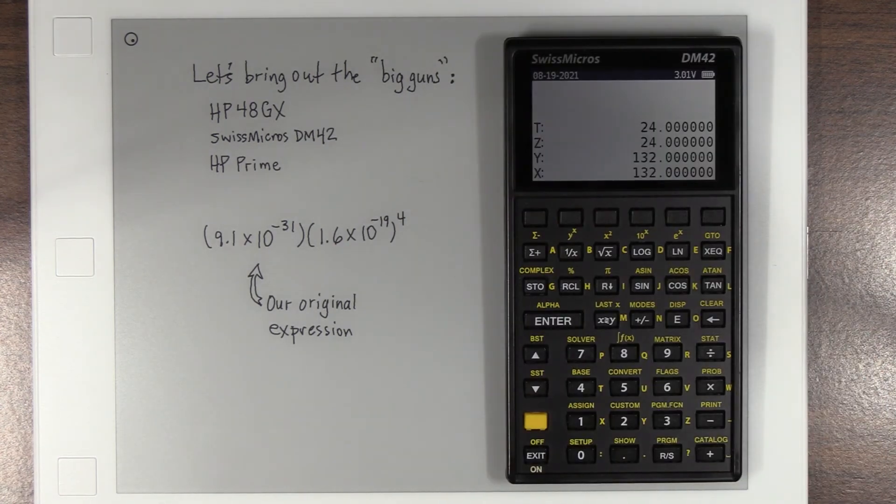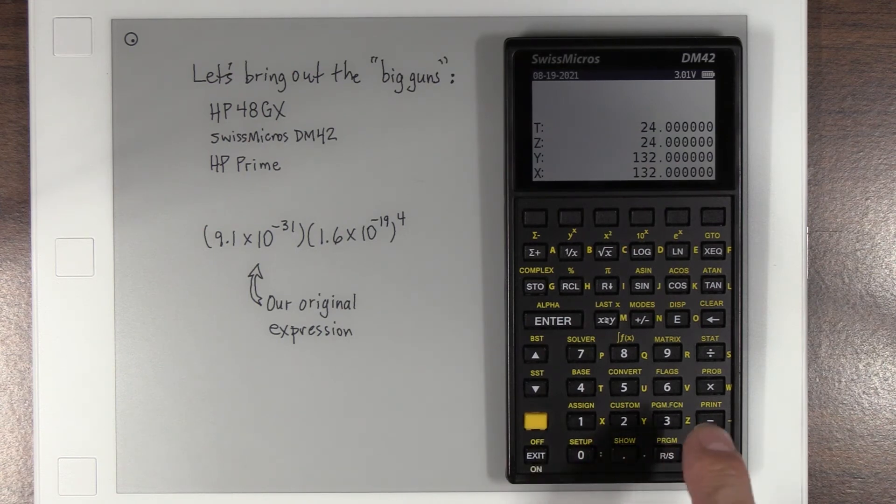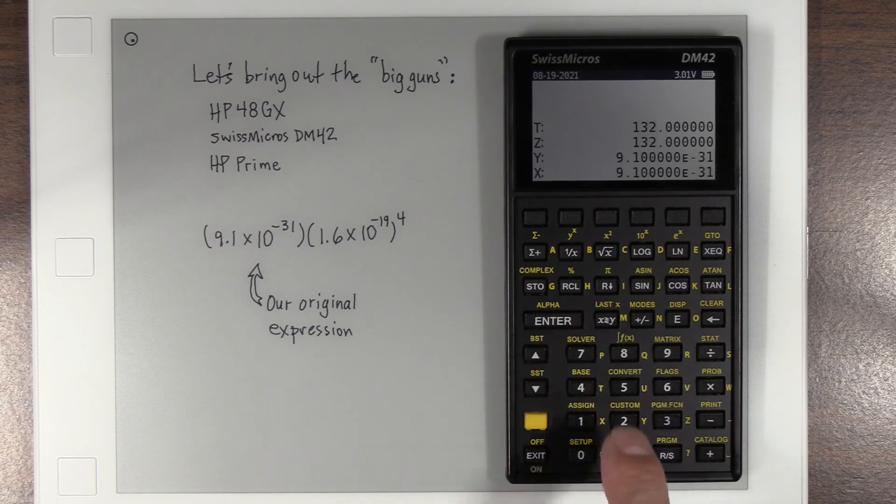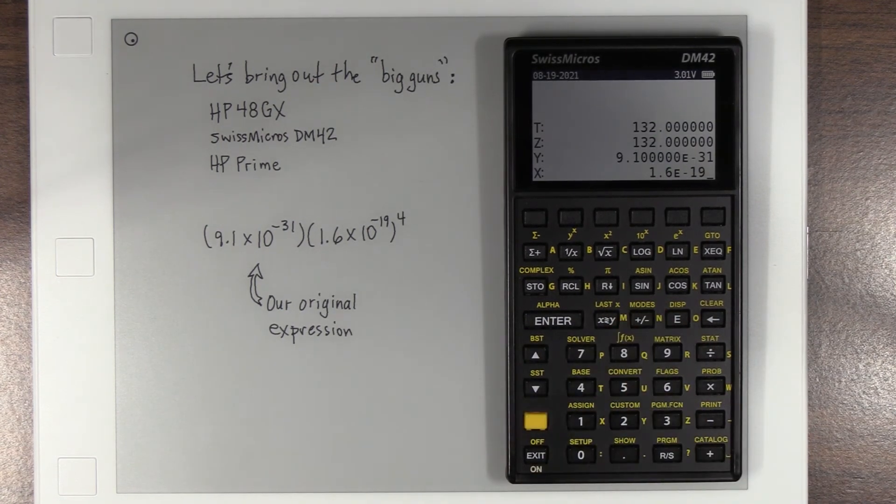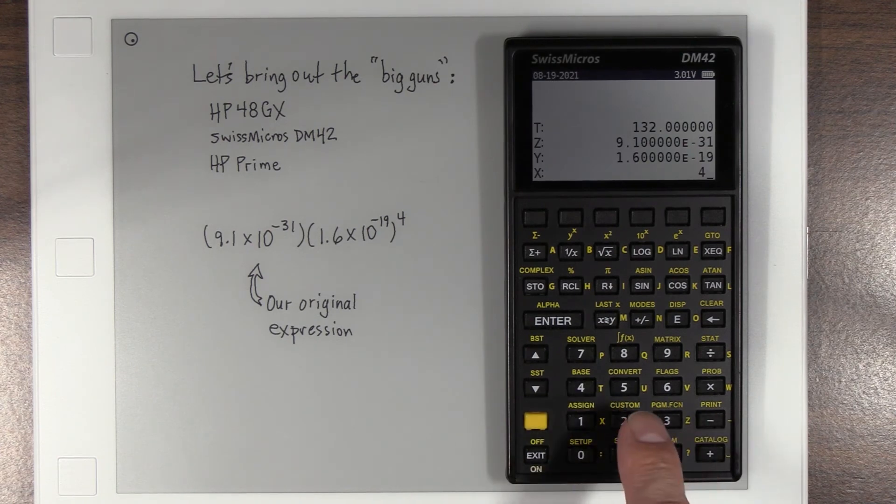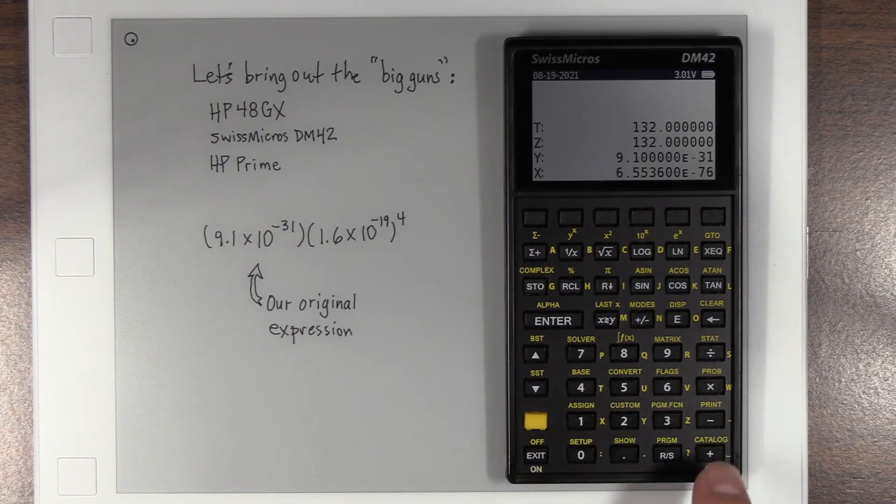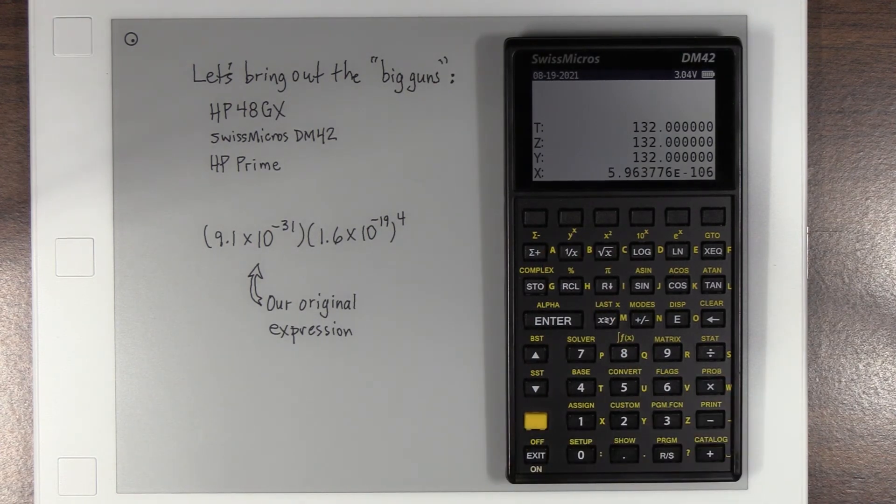Now let's try the Swiss Micros DM-42. And we'll do 9.1, 10 to the negative 31, 1.6 times 10 to the negative 19. This is the original problem, by the way, the very original one we tried. And we're going to the fourth power. And so we go to the fourth power, and then we've got to multiply those together, and again, gives us the correct answer. No trouble at all.